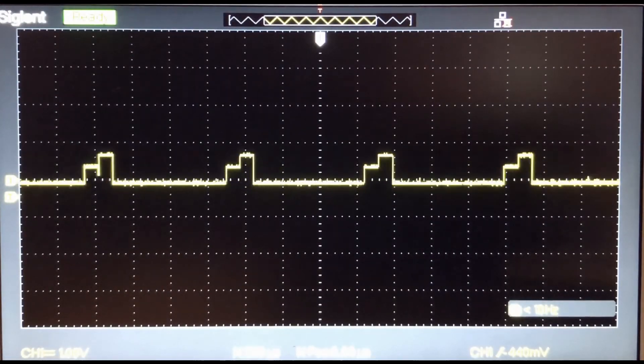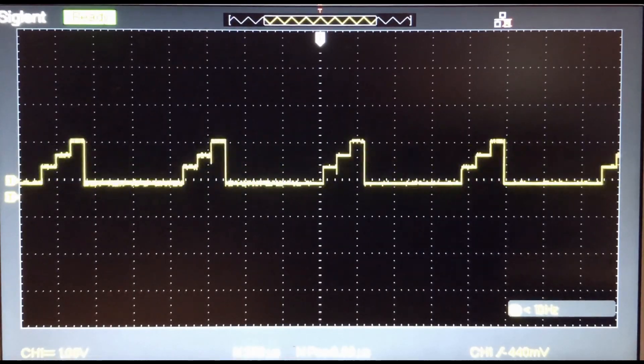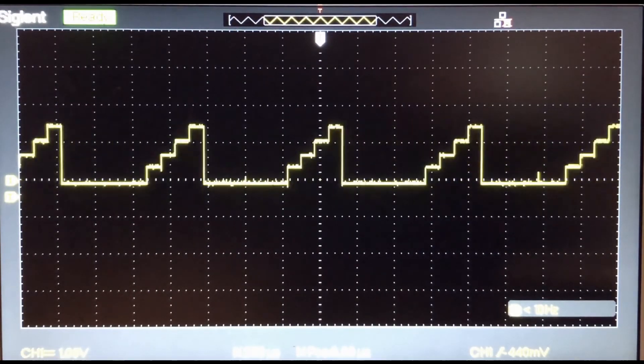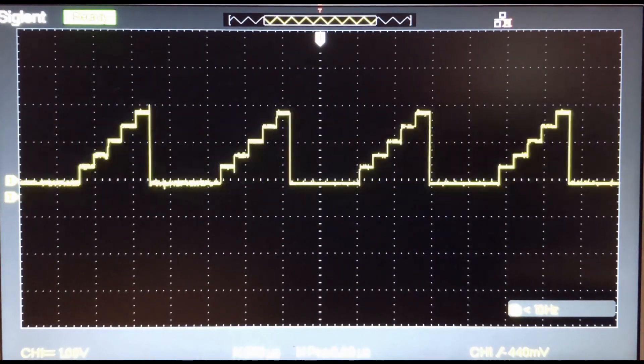As you can see on the scope, we change the amplitude of each pulse by the associated pot in order to form the required waveform.